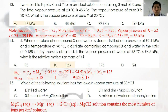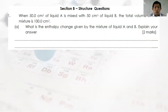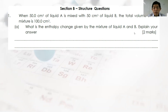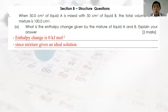Section B, Structure Question 1a: When 50 cm³ of liquid A is mixed with 50 cm³ of liquid B, the total volume is exactly 100 cm³. This indicates it is an ideal mixture. Therefore, the enthalpy change of mixing is zero.